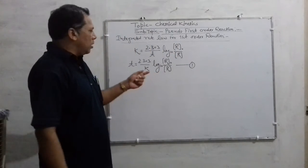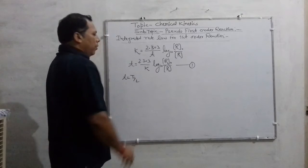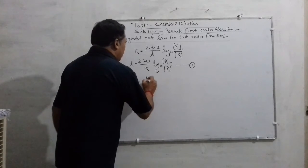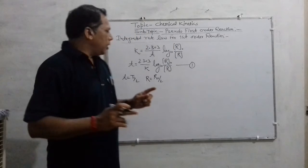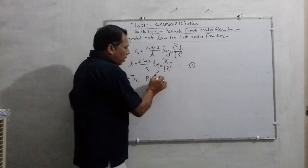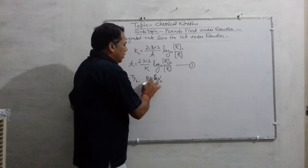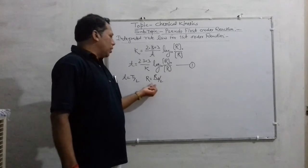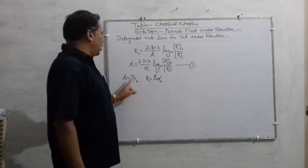In this expression, suppose this is equation one. If we put T half in place of small t, where T half denotes half-life period (HLP), and in place of the final concentration R, we write R₀ by 2, according to the definition of half-life period — that is, the time at which the concentration of the reactant becomes half of its initial. So R equals R₀ by 2 is the half of the initial concentration.